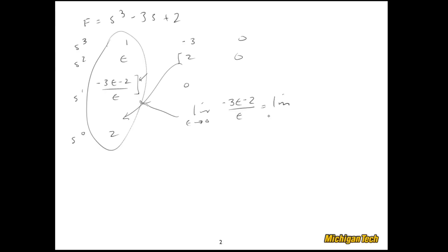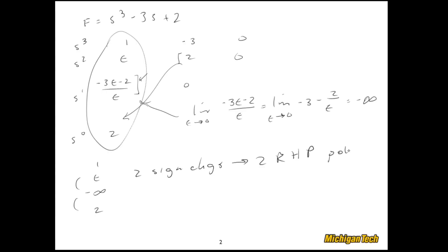Now we analyze the first column looking for sign changes, but we need to sort out the sign of that element. We take the limit as ε → 0 of (-3ε - 2)/ε, which equals the limit of (-3 - 2/ε), giving us negative infinity. So the first column has two sign changes, meaning we have two right half plane poles. That's Special Case 1 — definitely unstable, just a matter of sorting out how many poles are in the right half plane.